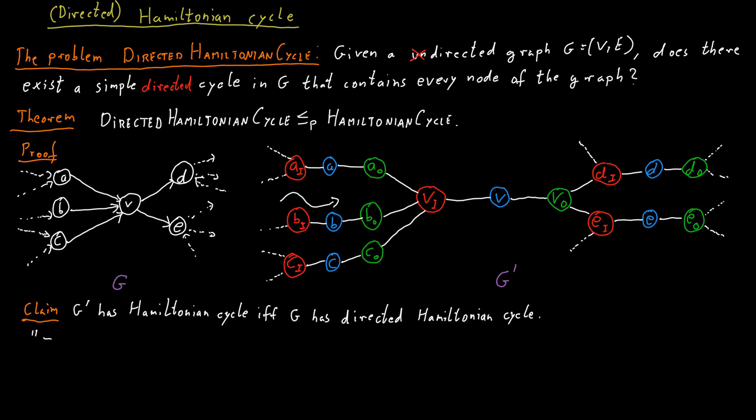So the first direction is maybe the easier one. If the original graph had a directed Hamiltonian cycle, then we can easily find an undirected Hamiltonian cycle in the new graph. Say in the directed Hamiltonian cycle, we visit the vertices in some order, say we visit vertex X, Y, and Z in that order.